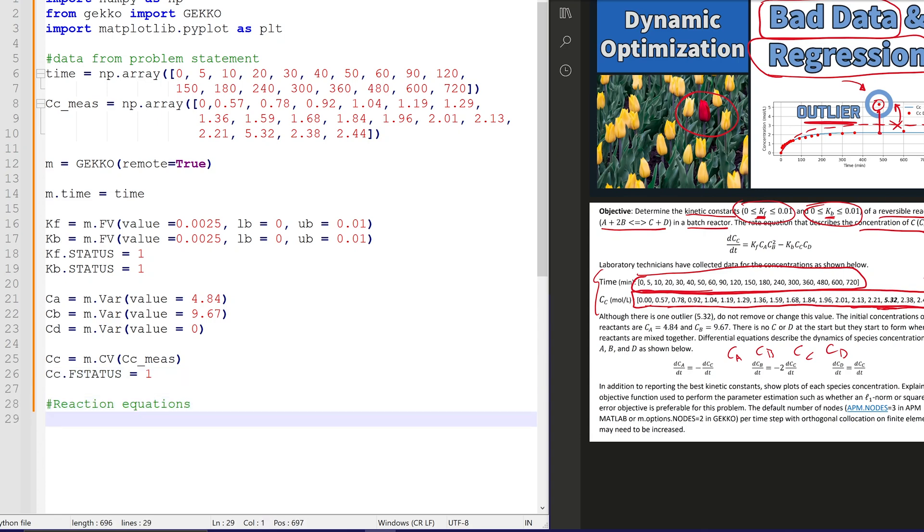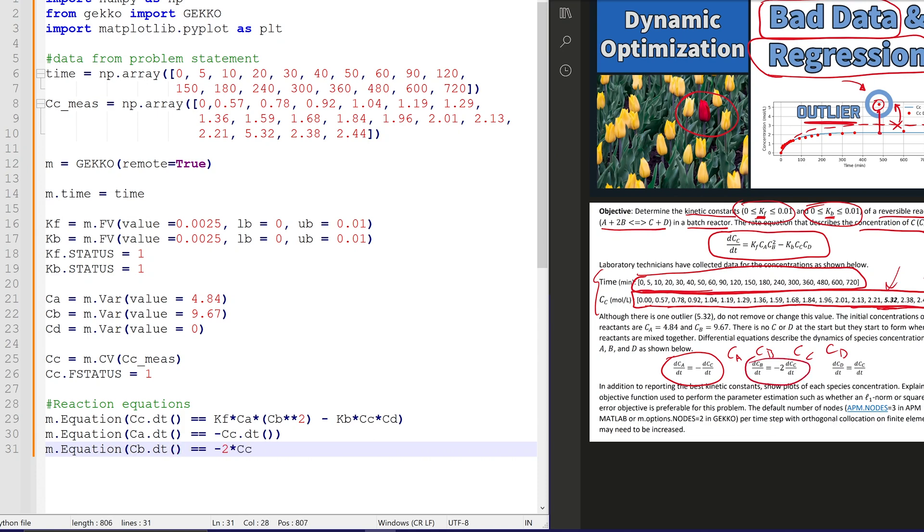Now C is going to be a CV, a controlled variable, because we have a measurement for it, and we'll turn its feedback status on. Now I'm going to type out the equations here for our differential equations. And we can see concentration of C I did that one first, and then the other differential equations are just functions of the derivative of concentration of C.